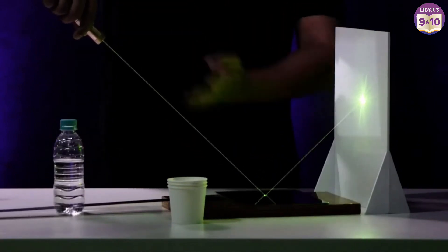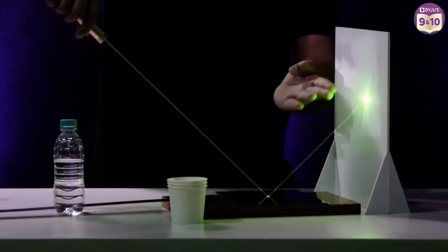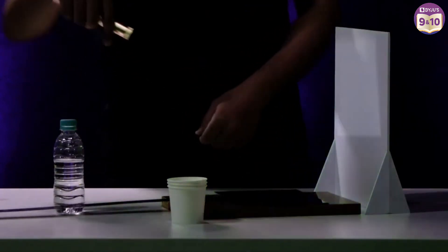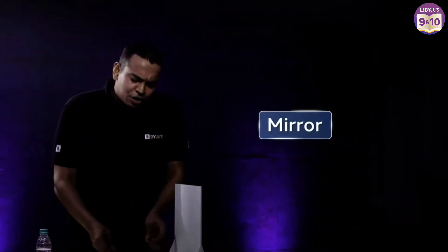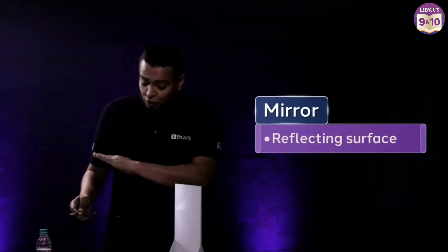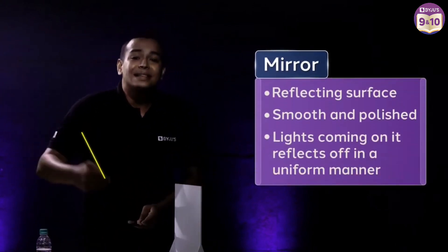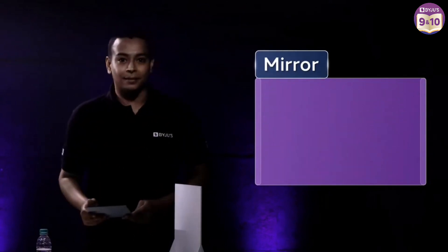See what happens when I bring a mirror into the picture — it's almost like all the light falling on the mirror is reflecting off. Look at this dot — it looks like I'm just pointing the laser right at it. That is so cool. That is the special thing about mirrors — mirrors are just another reflecting surface which is really smooth and polished such that all the light coming on it reflects off in a uniform manner.